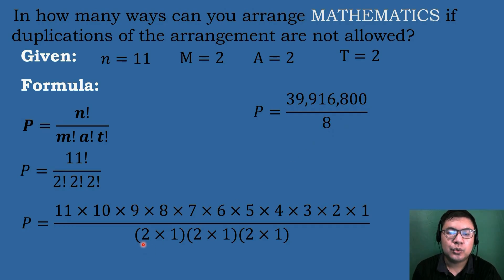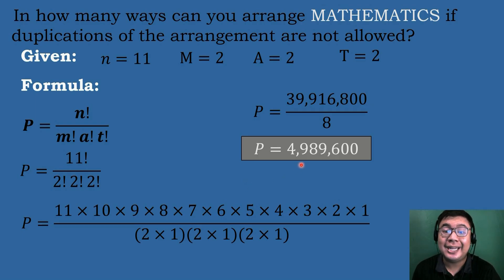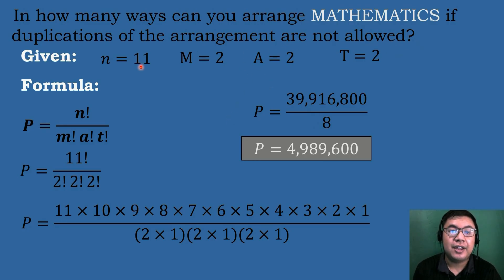So the denominator is 2 times 2 times 2, which equals 8. Dividing 39,916,800 by 8 equals 4,989,600. Therefore, there are 4,989,600 possible ways we can arrange the letters from the word 'mathematics' if duplications of the arrangement are not allowed.